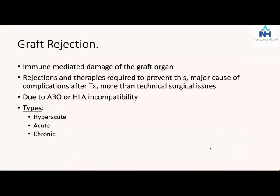Any organ which is transplanted is attacked by the host immune system in the absence of immunosuppression, and that is called rejection. It is basically immune mediated damage to the graft organ. Rejection and the medication to prevent it is the cause of majority of long term complications in transplantation, irrespective of the organ. More than the technical issues of surgery - anastomosing arteries, reconstructing bile ducts - all those technical issues have been crossed. The outcomes now are determined largely by rejection and by side effects of drugs given to combat rejection. The whole focus of transplantation has now shifted towards management and understanding of rejection and its treatment.